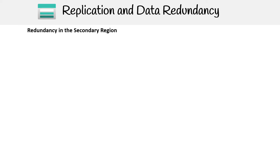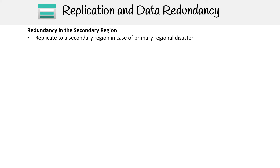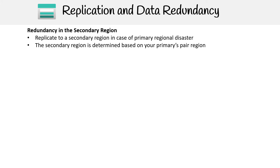We're taking a look at secondary region redundancy. The purpose of this is: if your primary region suffers a regional disaster and all the data centers are out, you can rely on that secondary region. Your secondary region is determined based on your primary's paired region — regions are paired with another region, and you don't get to pick your twin; it's just what you get.